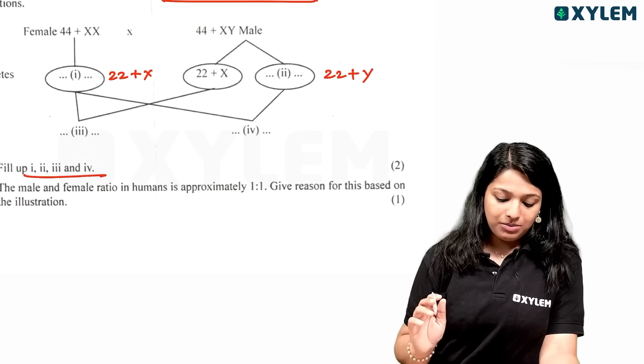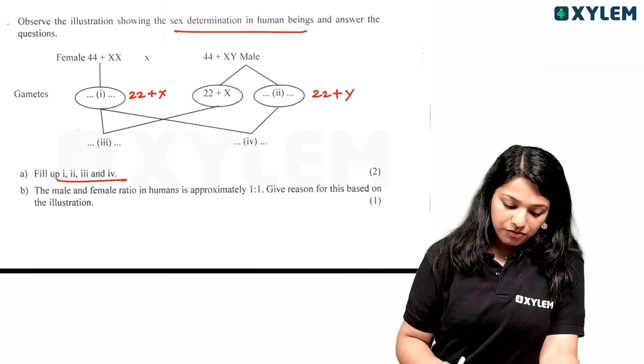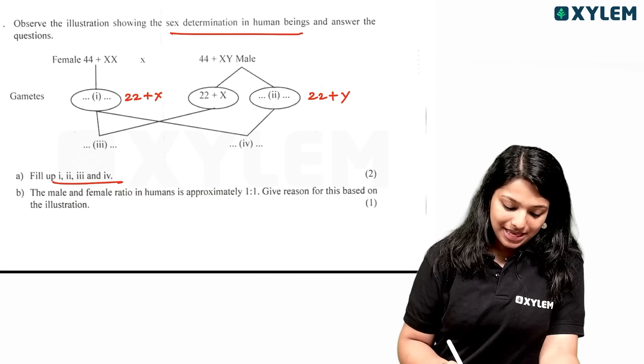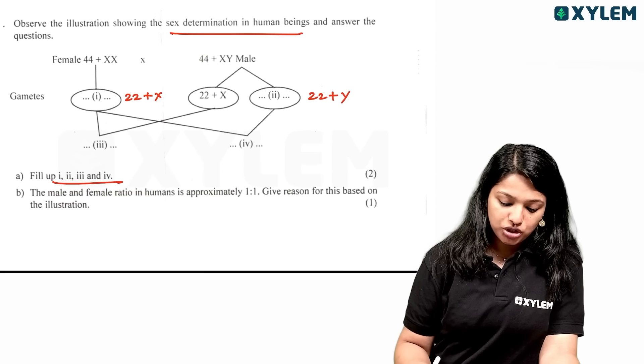We can fill the form. The gamete 44 plus XX with 22 plus X gives 44 plus XX. The gamete 44 plus XX with 22 plus Y gives 44 plus XY.